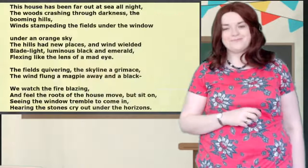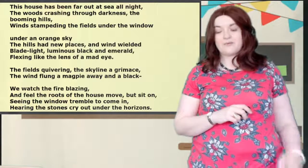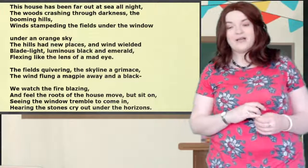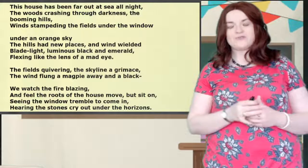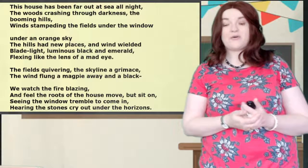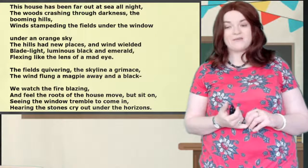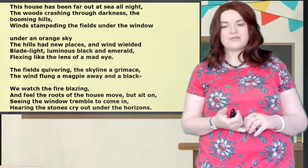Right, we're going to have a quick look at another wee poem. This one is by a very famous poet called Ted Hughes, and the poem is about wind. I've cut bits of it out just to focus on the personification. Here it is: 'This house has been far out at sea all night. The woods crashing through darkness. The booming hills. Wind stampeding the fields under the window.'